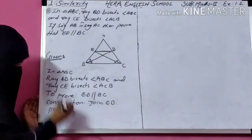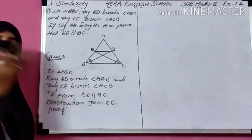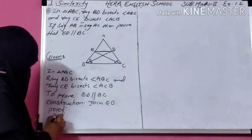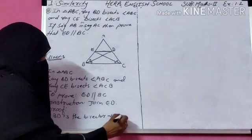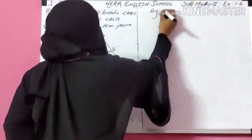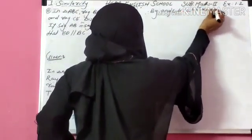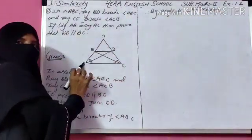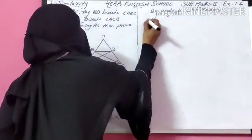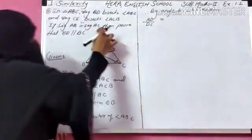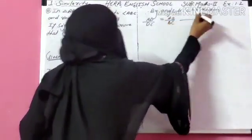Start proof. BD is the bisector of angle ABC, so we apply the angle bisector theorem. By angle bisector theorem, the ratio of the side opposite to angle B equals the ratio of the remaining sides. So: AD upon DC equals AB upon BC. Label this equation number 1.